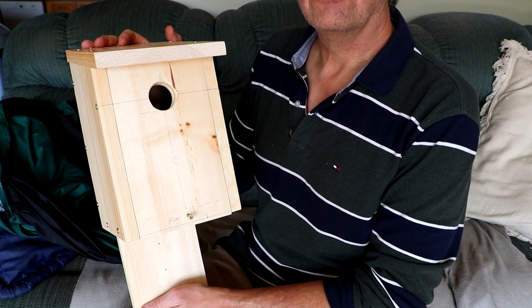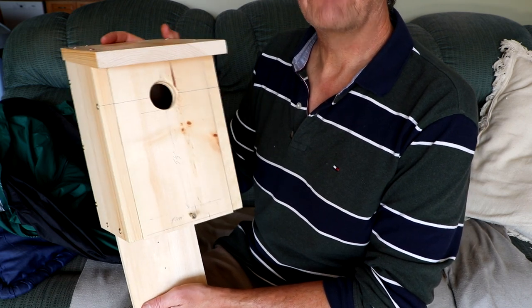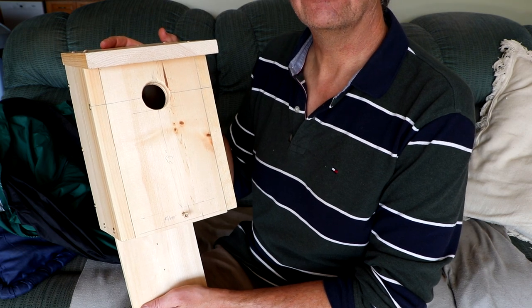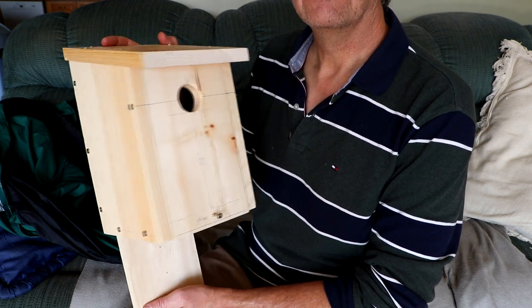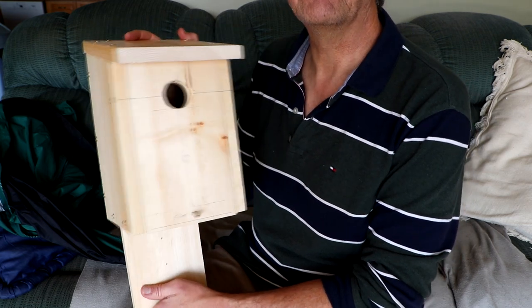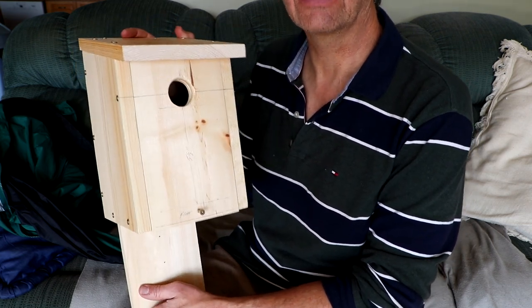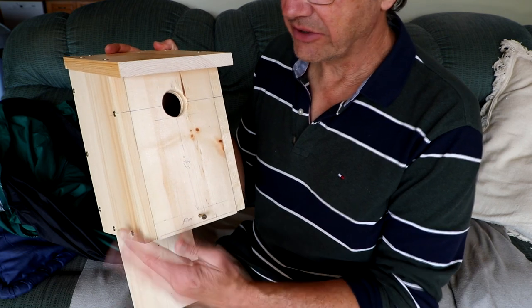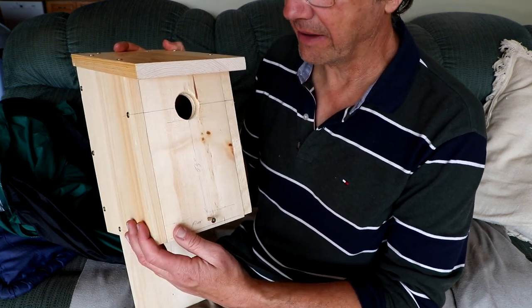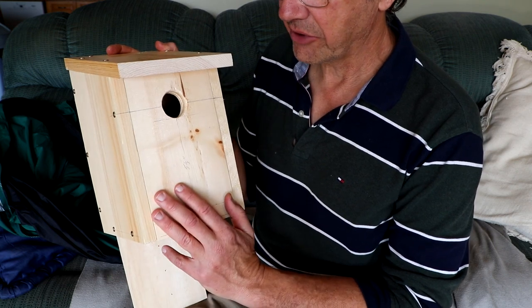Like most tree swallow and bluebird boxes, there's a number of features that are standard or should be standard in their design. This one shares most of those features and also has some of its own characteristics. First of all, I'll just say a bit about the box itself. It's made out of white pine planking that you can get at any lumber store.